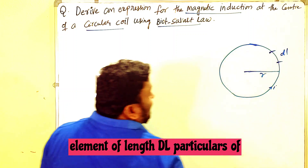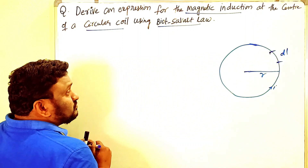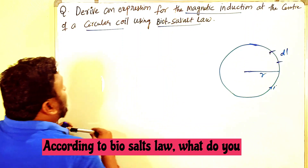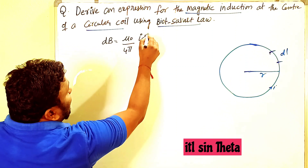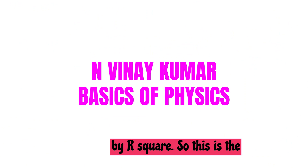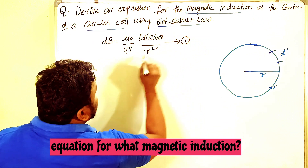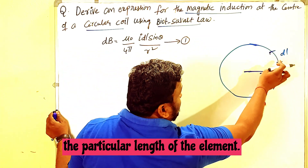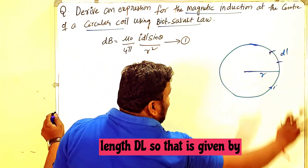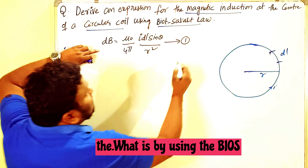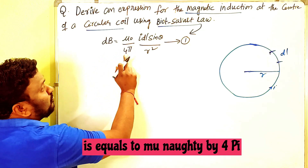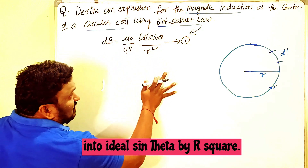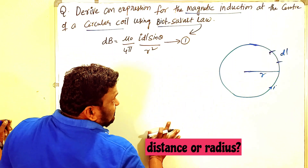According to Biot-Savart's law, the magnetic induction of a particular small element is: dB = (μ₀/4π) × (I dl sinθ / r²). Here, dB is the magnetic induction due to the element of length dl, r is the radius, and θ is the angle between the radius vector r and the element dl.